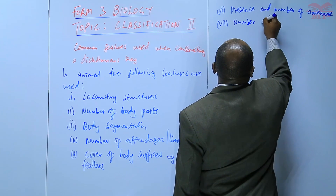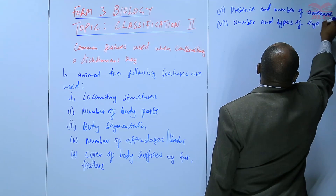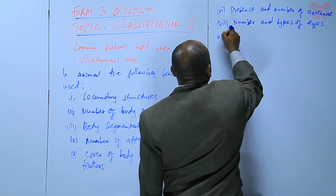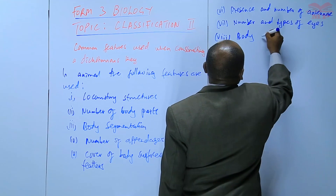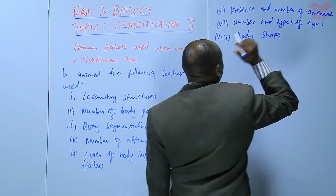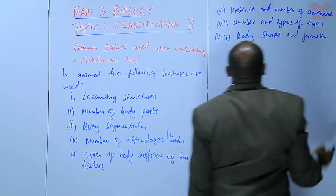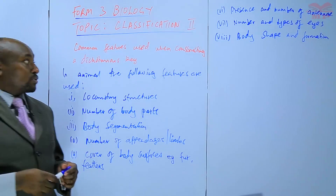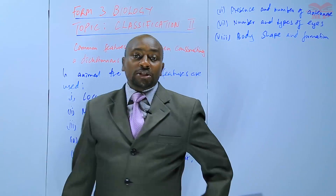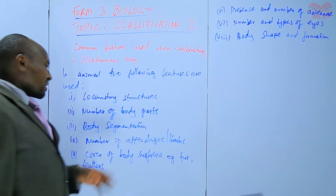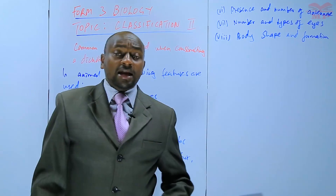We can also use the number and types of eyes, and the body shape and formation. There are those that have cylindrical bodies and those that have flattened bodies. All those are structures that we use when we are constructing the dichotomous key in animals. Those structures are many but we cannot exhaust them.